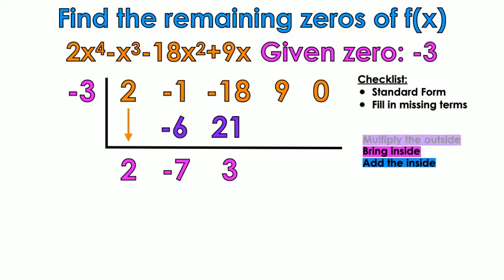Repeat again. Multiply the outsides. Negative 3 times positive 3. Bring it inside. Negative 9. Add the insides, 0. My original problem was a degree 4, so that means my answer is going to be a degree 3. Very good.